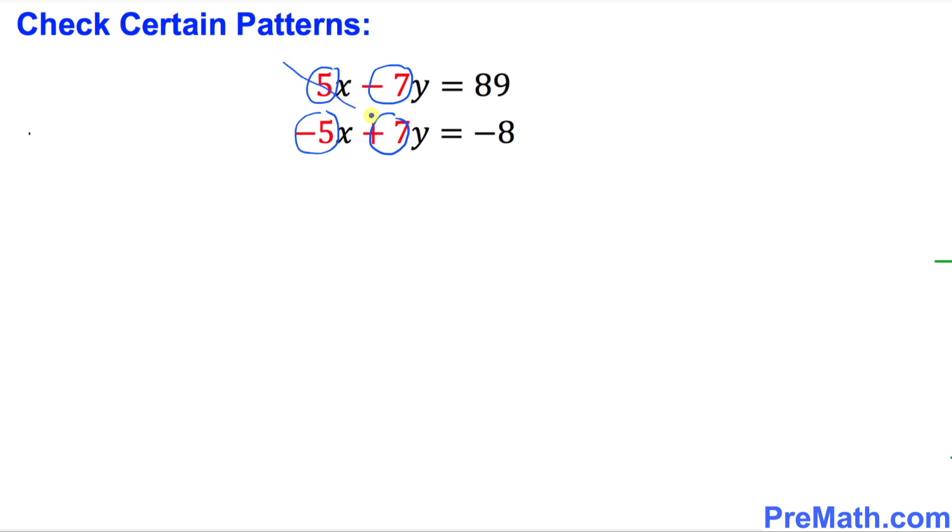5 times 7 is going to be positive 35. And if I cross multiply the other way around, negative 5 times negative 7 is going to be positive 35 as well. As long as these two numbers, positive 35, are the same, then we have no solution to this given system of equations.